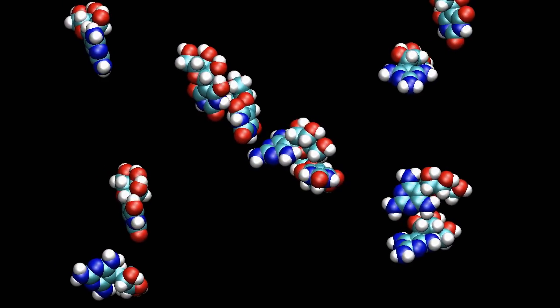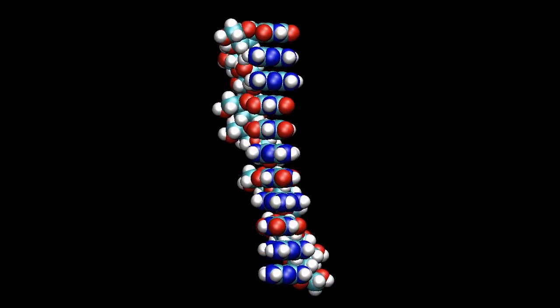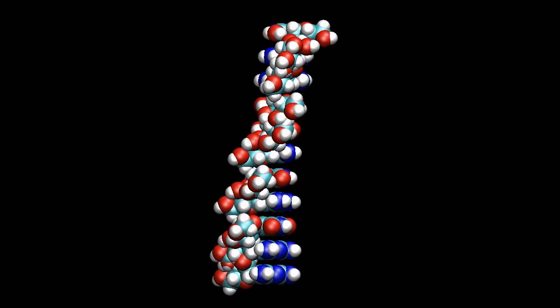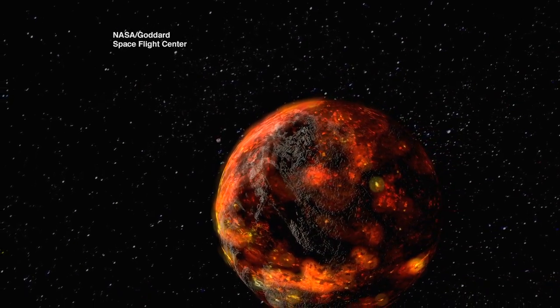They are homing in on how chain-like chemicals called polymers first came together and evolved 3.5 to 4 billion years ago. And we're thinking that on the early Earth...